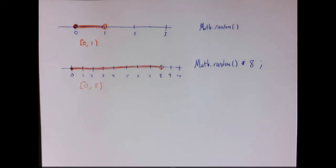But notice that the endpoints are the same. So the left endpoint is still closed, and the right endpoint is still open. So that's why you can't get the value 8 by saying Math.random times 8.